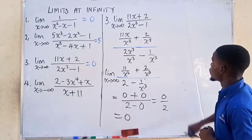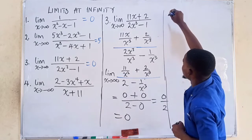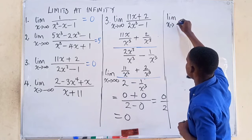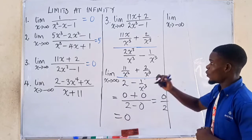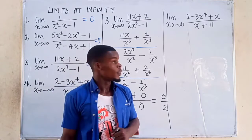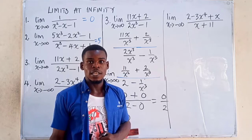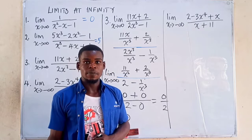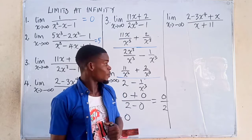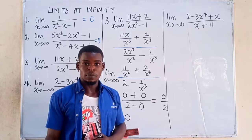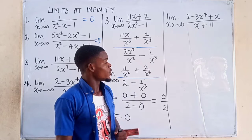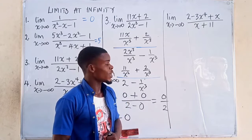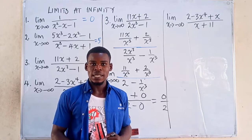For the last question, this one is a little bit more complicated. We have the limit as x tends to negative infinity of 2 minus 3x to the fourth power plus x, divided by x plus 11. As we did in the previous question, we divide numerator and denominator by the highest power of x in the denominator — always the denominator.